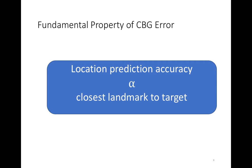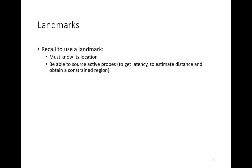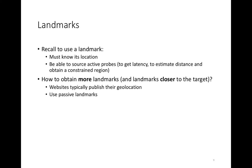So we'd like to obtain as many different landmarks as possible, and specifically landmarks close to the target. This is one of the fundamental insights this paper makes. Recall that to use a landmark, we must first know its location, and second, we must be able to source active probes from that landmark. If we know its location and can source probes, we can get RTTs to the target, get a latency estimate, estimate the distance, and obtain constrained regions. The question is: how can we obtain more landmarks, and how can we obtain landmarks closer to the target?